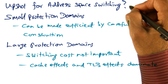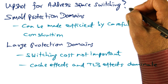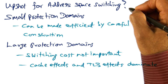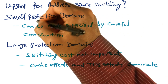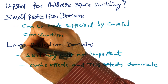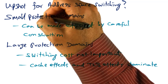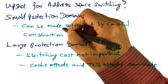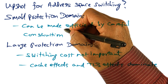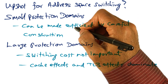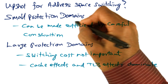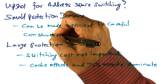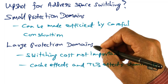The key question regarding address space switching is whether we are switching between small protection domains or large protection domains. If switching between small protection domains, we can take advantage of whatever the hardware provides to make switching efficient through careful construction of the services.